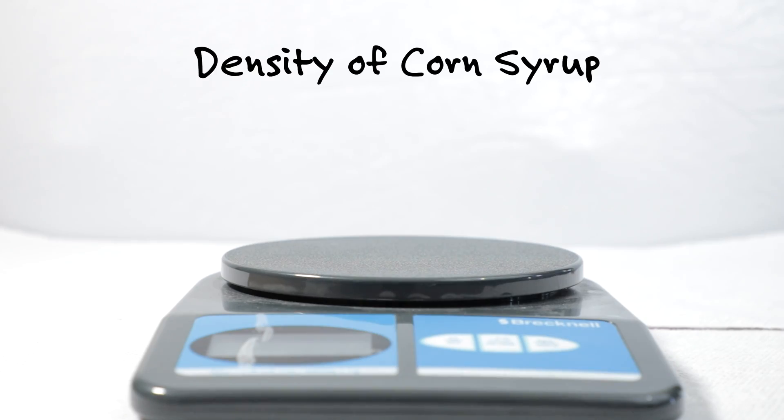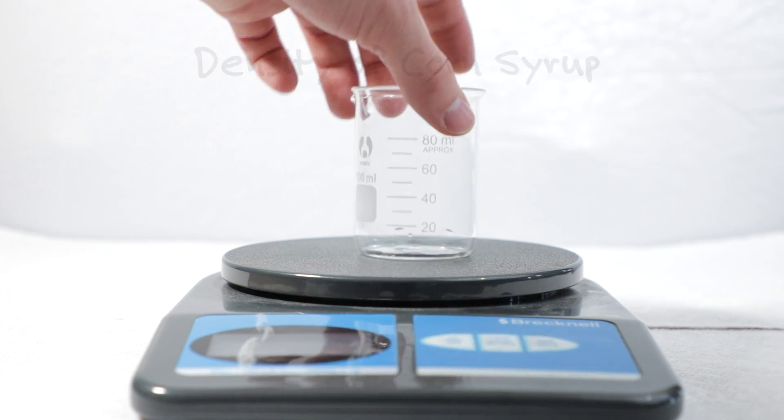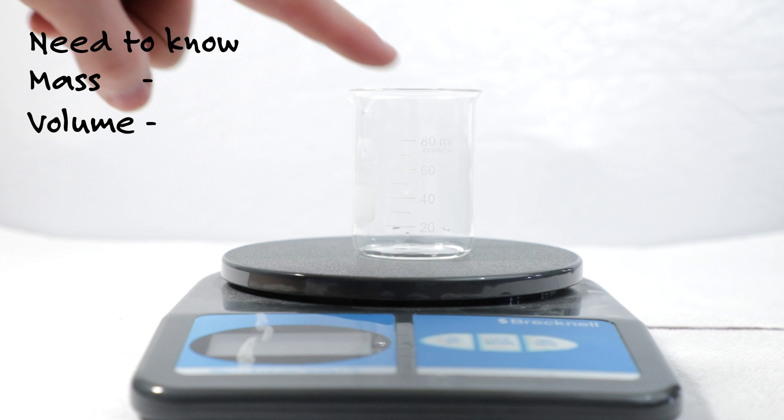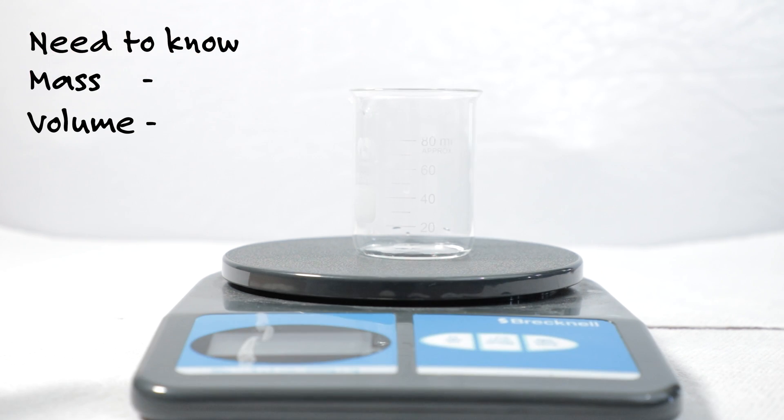Let's see how this works with an experiment. To calculate the density we need to know the mass and volume of our corn syrup. So let's first measure out the mass of our container since we are only interested in the mass of the syrup. My beaker weighs 48 grams.